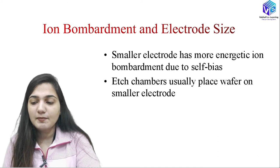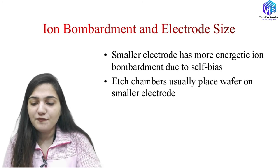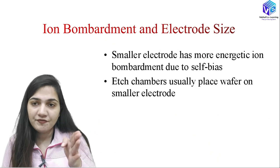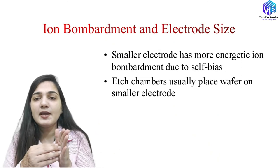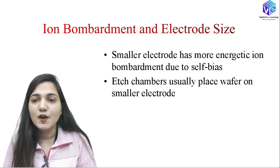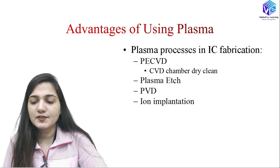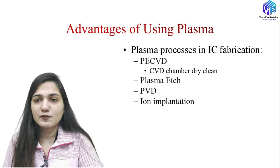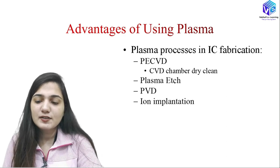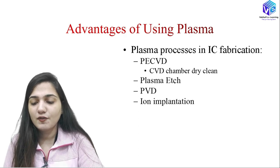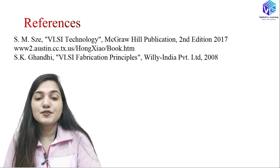Coming to ion bombardment and electrode size: a smaller electrode gives more energetic ions and more ion bombardment due to higher self-bias. Chambers usually place the wafer on the smaller electrode, so there is high ion bombardment which is useful for etching purposes. The advantages of using plasma include dry cleaning — removing contaminant particles. In CVD it is used for chamber dry clean, plasma etching, ion implantation, and the PVD process.